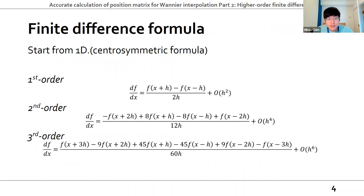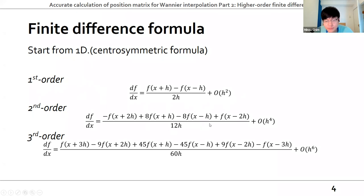Assuming a centrally symmetric formula for finite differences: the first-order formula has two neighbors at −h and +h with error proportional to h². The second-order formula has four neighbors with error proportional to h⁴. In this manner we can extend to the nth order and find the coefficients and error dependence.